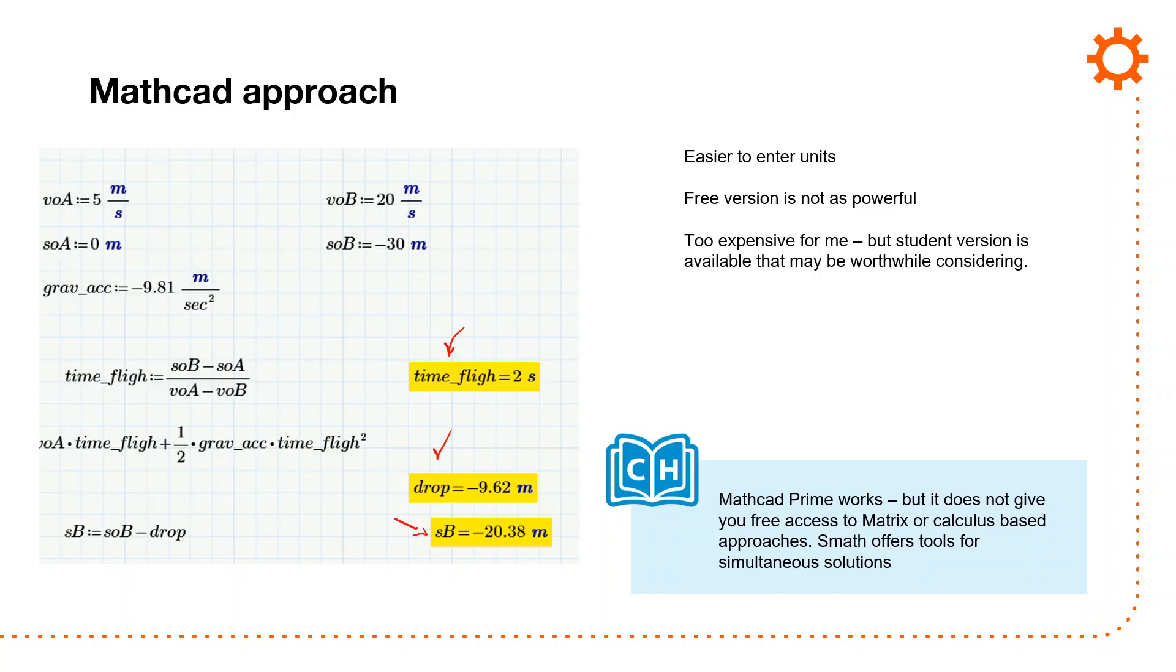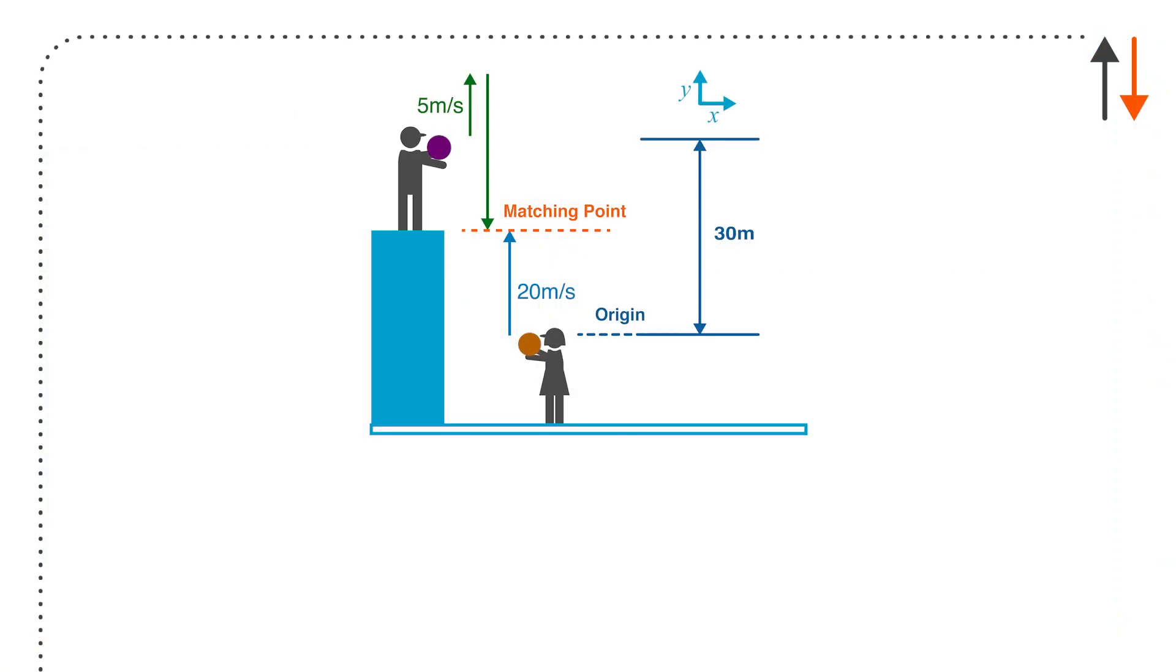It's too expensive. It's something on the order of $1,000. But the student version is available, and you can take a look if you're interested. It's great for lots of things. Maple is also, there's lots of stuff out there that's really great for this. And so that's one of the problems. In particular, later on when you start to solve simultaneous equations, this really is kind of a pain.